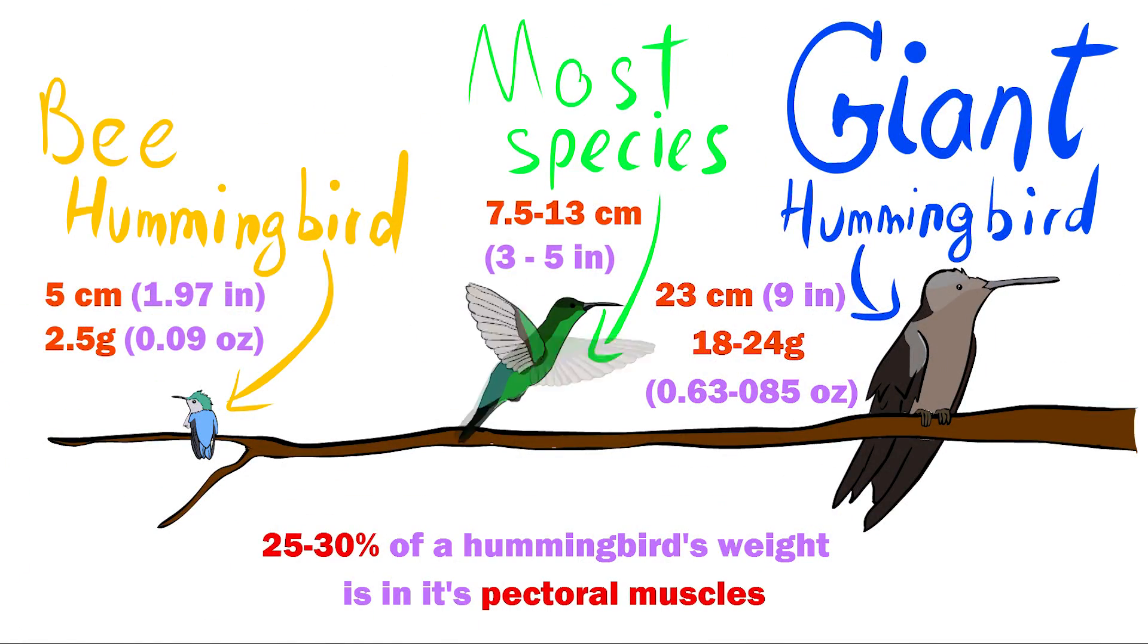Most species measure between 7.5 and 13 cm in length. The smallest hummingbird is the bee hummingbird, which measures 5 cm in length and weighs just 2.5 grams, being also the smallest bird species in the world. The biggest hummingbird species is the giant hummingbird, obviously, which weighs 18 to 24 grams and measures 23 cm.